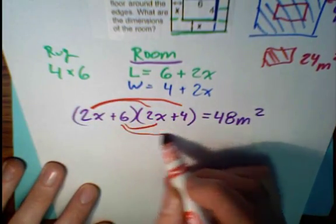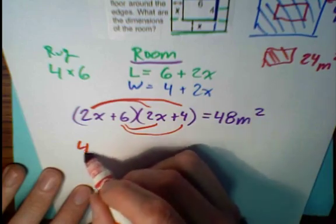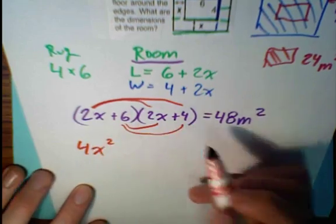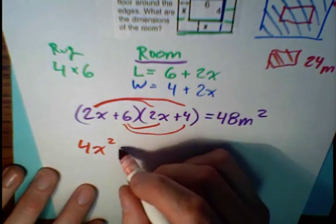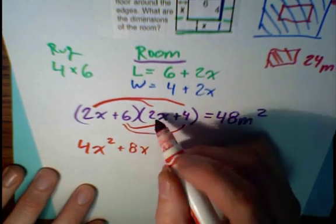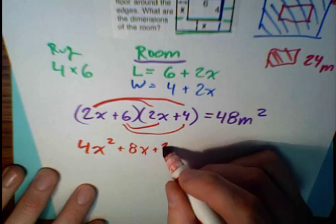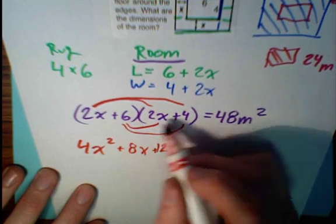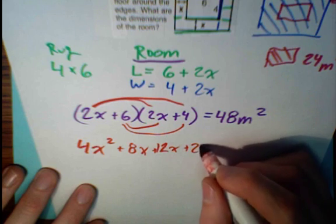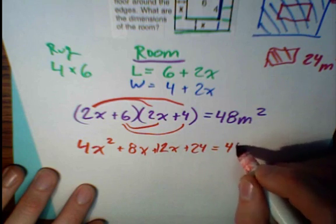F-O-I-L. So we have 4x squared is F. 2x times 4 is 8x. 2x times 6 is a 12x. And then 6 times 4 is a 24. And this equals 48.